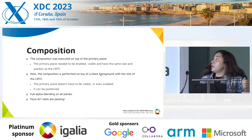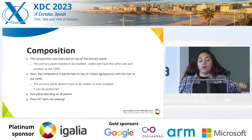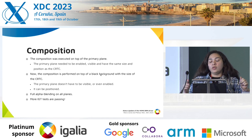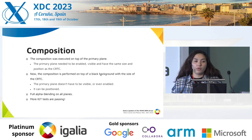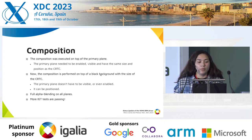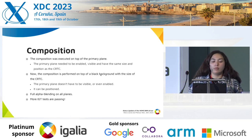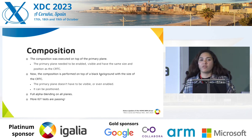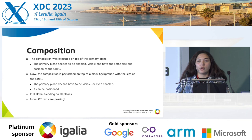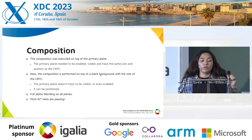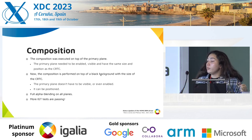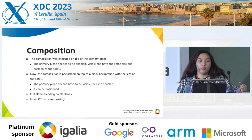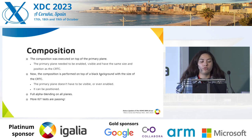About the composition: it used to be executed on top of the primary plane, which meant the primary plane needed to be enabled, visible, and the same size as the CRTC — which doesn't allow for much flexibility. Now the composition is performed on top of a black background with the size of the CRTC, which means the primary plane can be positioned anywhere or even disabled. This means we now have more IGT tests passing, because there are IGT tests that require the primary plane to be positioned. Also, now we have full alpha blending on all planes, because we are doing the composition on top of the CRTC.